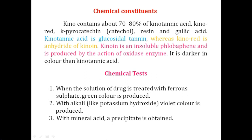Next are the chemical tests. When the solution of the drug is treated with ferrous sulfate, a green color is produced. The second chemical test: with alkali such as KOH or NaOH, you will observe a violet color. The third test: with mineral acid, precipitation is produced. These three chemical tests can be used for the identification of kino or pterocarpus.